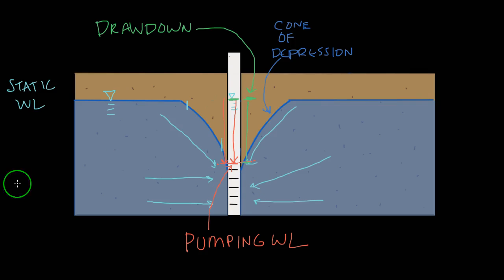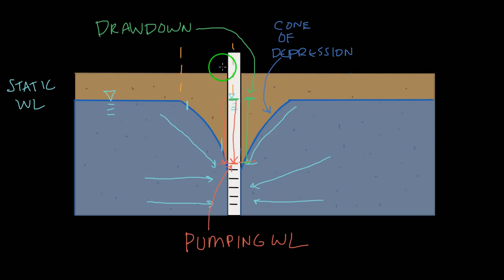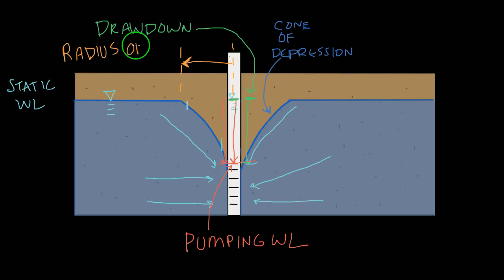One other term I want to define is called the radius of influence. It's related to the cone of depression and is another self-explanatory name — it's just the radius that the cone of depression reaches out to from the well. It's how far out the water table is going to be affected by our pumping. It's just a radius from the well to the edge of the cone of depression.